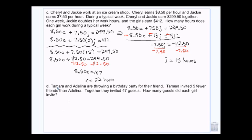Tamara and Adelina are throwing a birthday party for their friend. Tamara invited five fewer friends than Adelina. That means Tamara is the same as Adelina minus five. And together, they invited 47 guests. Now, do you guys want to rearrange this so we can use elimination? Or would you rather use substitution? Substitution? Okay.